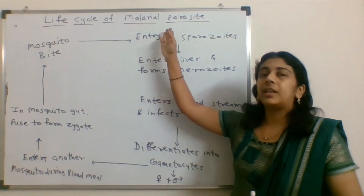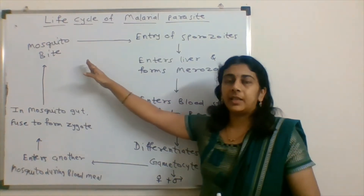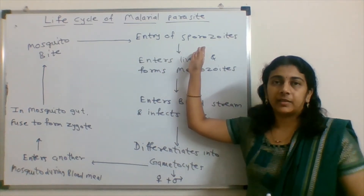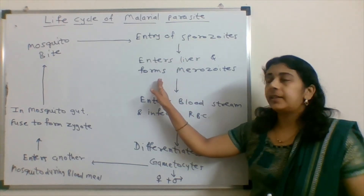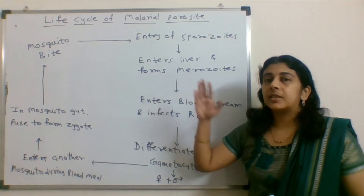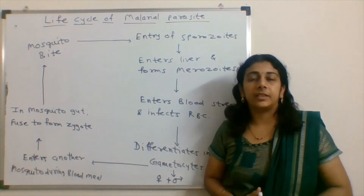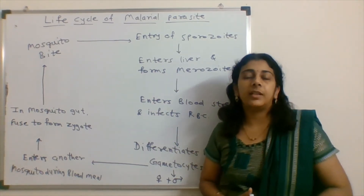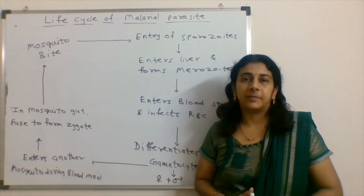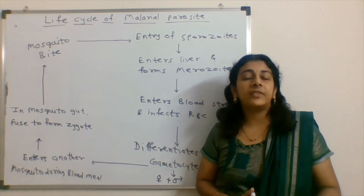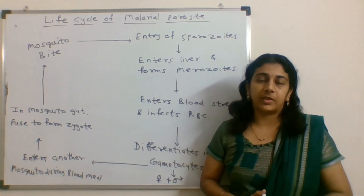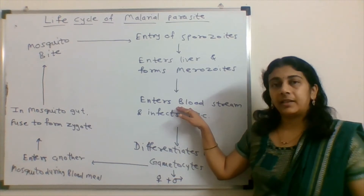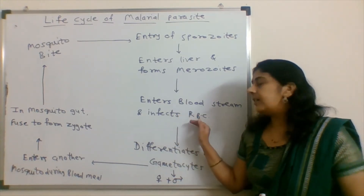Here the life cycle of the malaria parasite is shown. During the blood meal through the mosquito bite, sporozoites enter the human body, remain in the blood, and then enter the liver. In the liver, sporozoites remain for about a week, where a single sporozoite infects a single hepatocyte and forms around five thousand to ten thousand merozoites. These merozoites then come into the blood and infect RBCs.